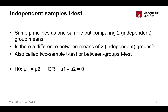The null hypothesis for our independent samples t-test can be written one of two ways. The first way is that mu1 equals mu2, where mu1 is the mean score for group 1 and mu2 is the mean score for group 2. The other way, using a little algebra, is to say that the difference between the two mean scores equals 0. These are two equivalent ways of representing the null hypothesis.